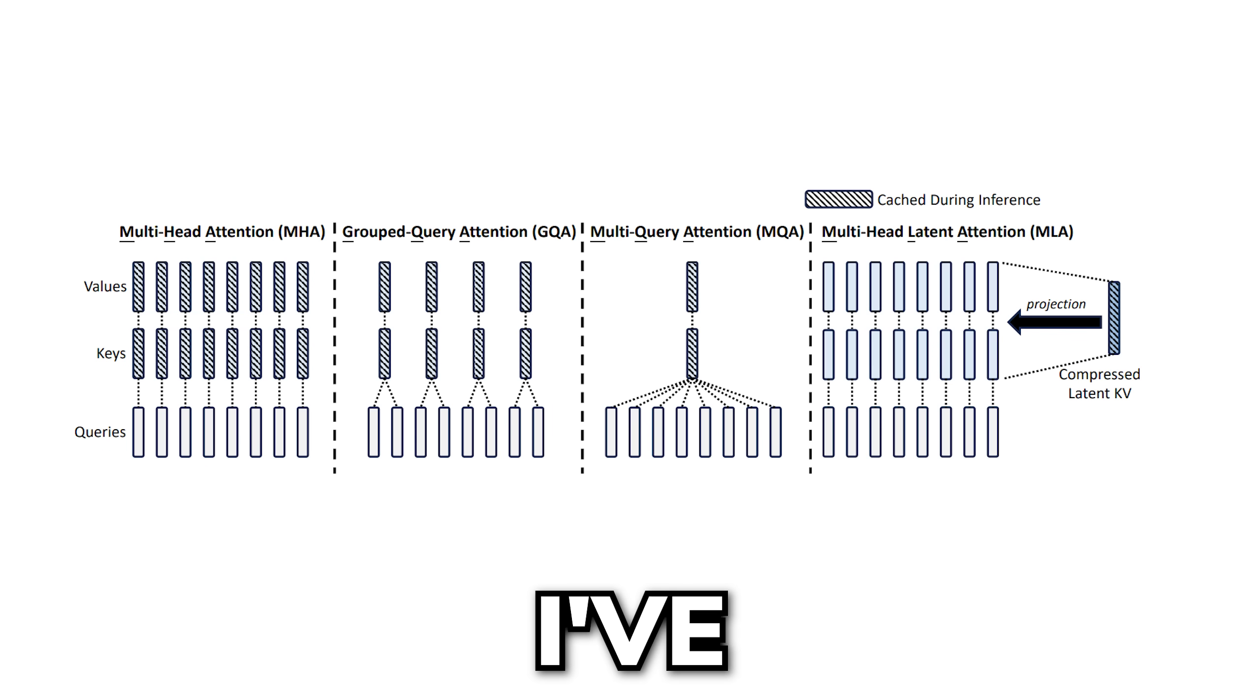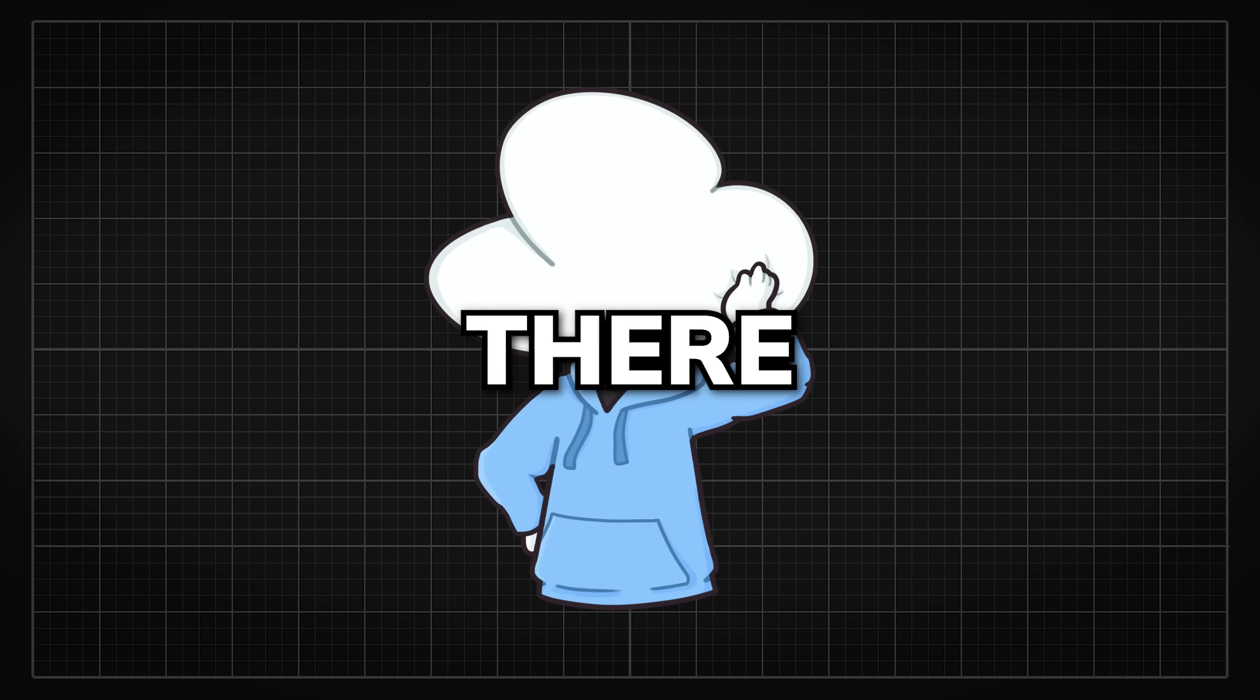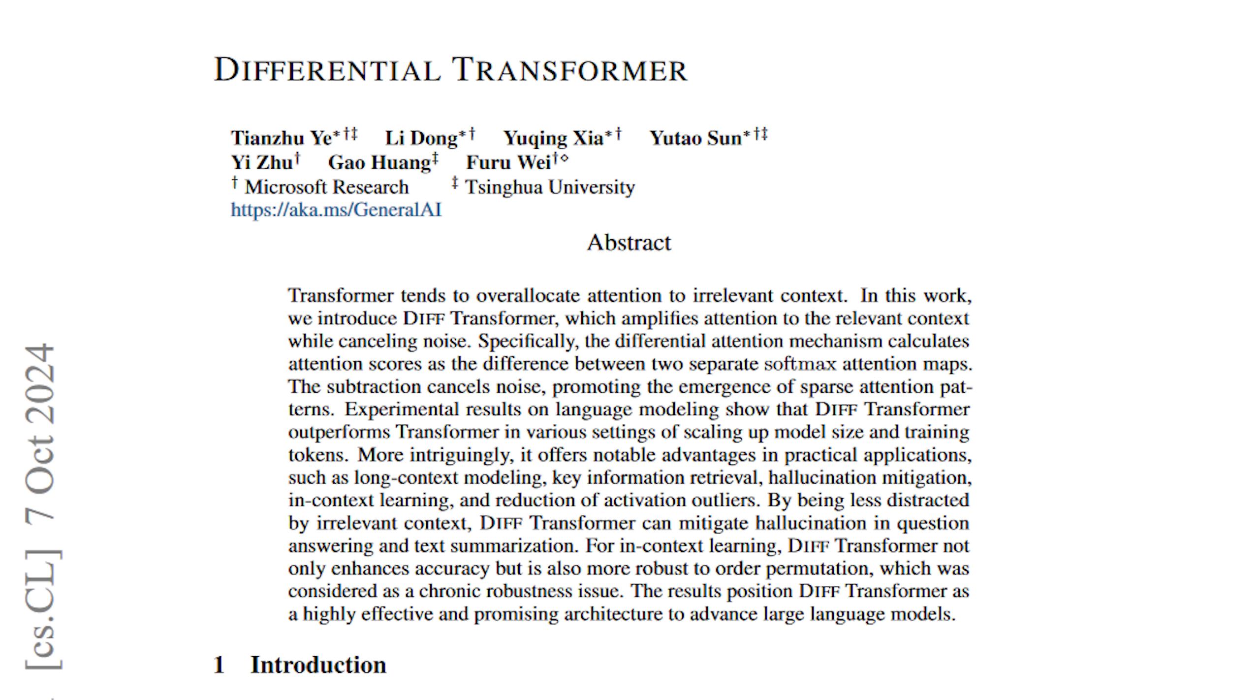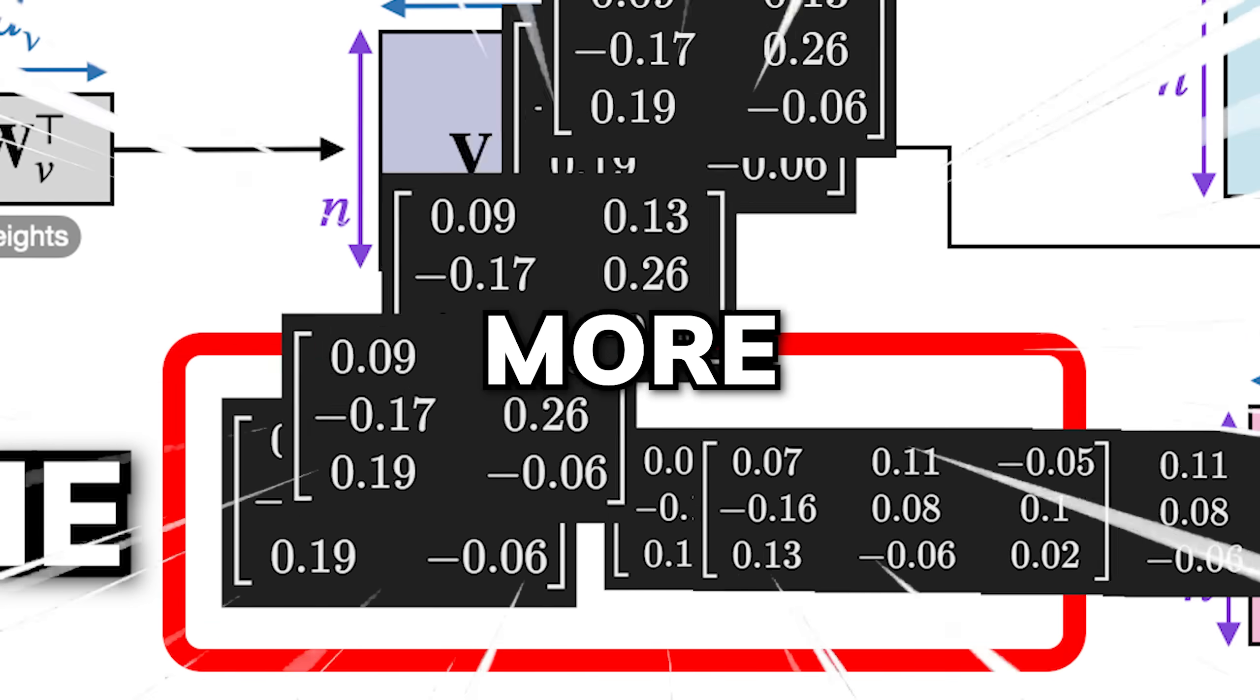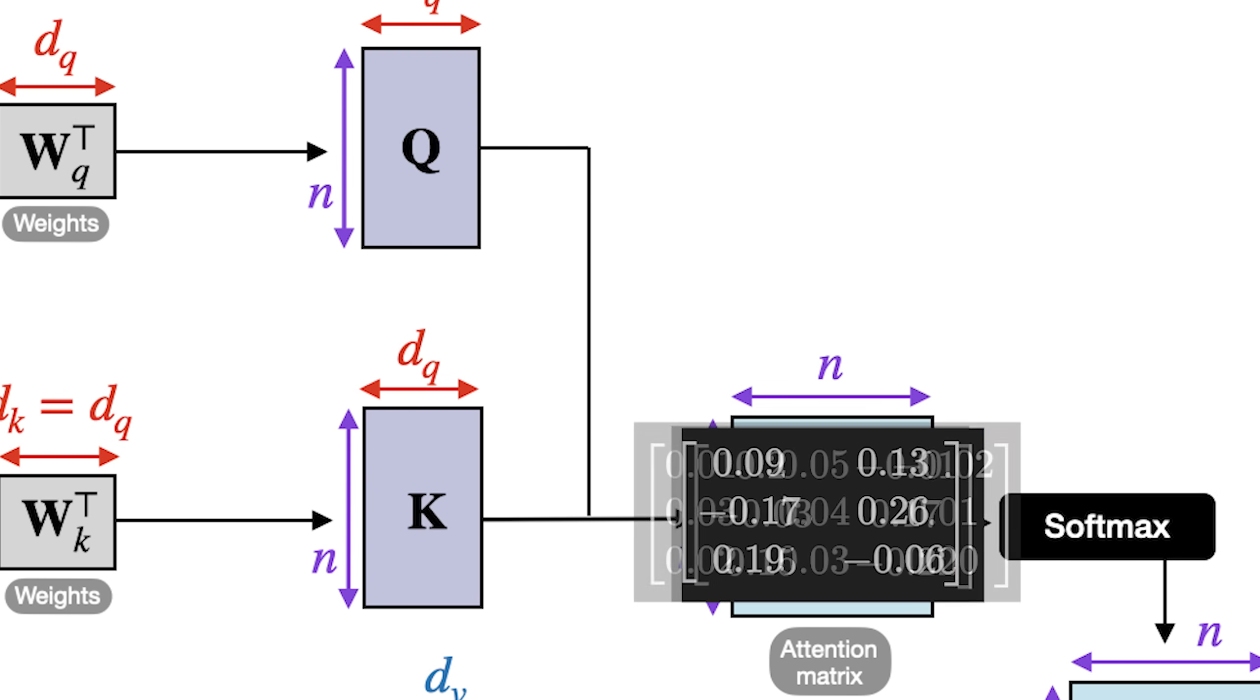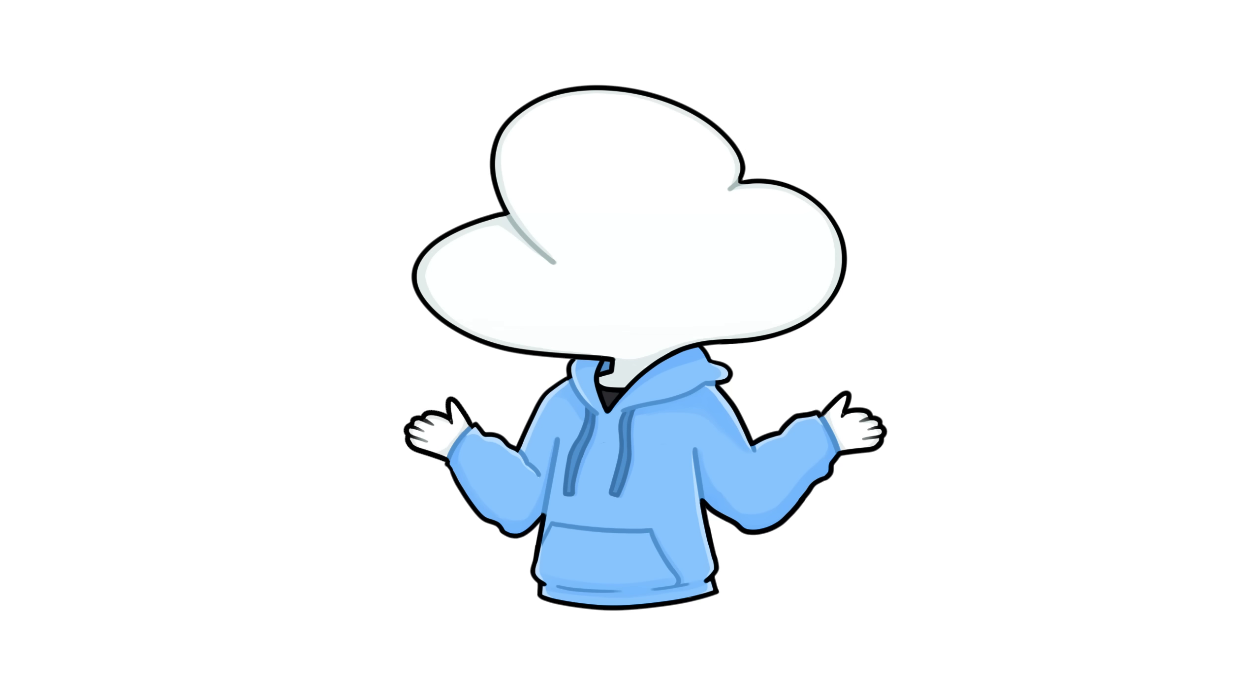And so far, the attention techniques I've mentioned are all aimed at improving efficiency. And in general, there hasn't been as much research on improving accuracy. That is not until a few weeks ago, a really interesting idea was proposed in this new paper called Differential Transformer.